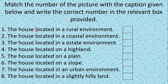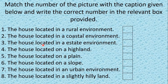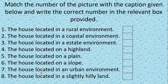Number 1: The house is located in a rural environment. Number 2: The house is located in a coastal environment. Number 3: The house is located in an estate environment. Number 4: The house is located on a highland. Number 5: The house is located on a plain. Number 6: The house is located on a slope. Number 7: The house is located in an urban environment. Number 8: The house is located in a slightly hilly land.